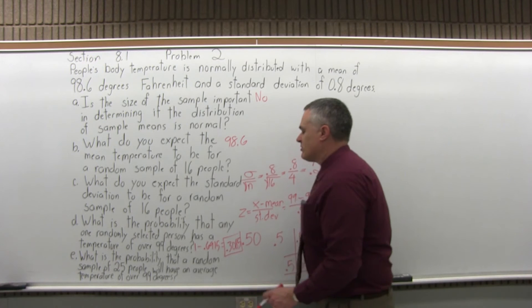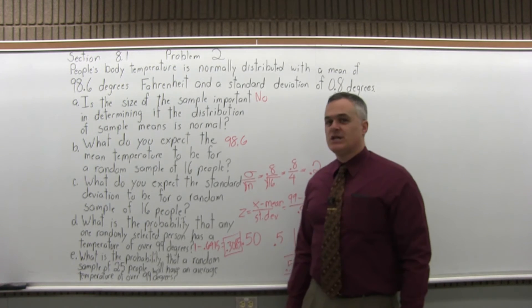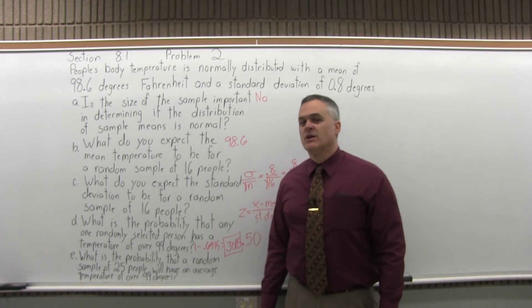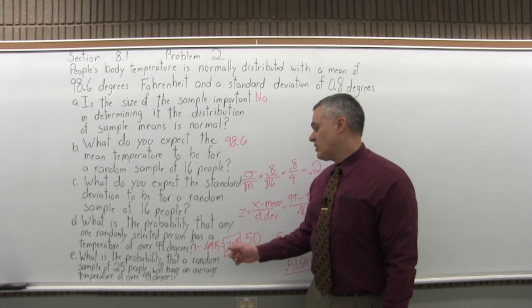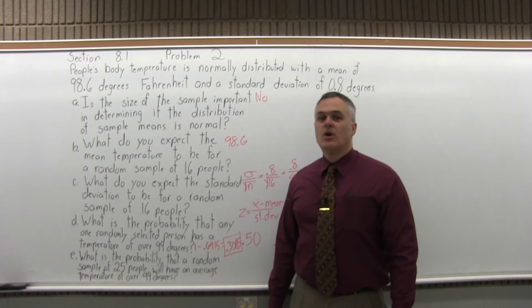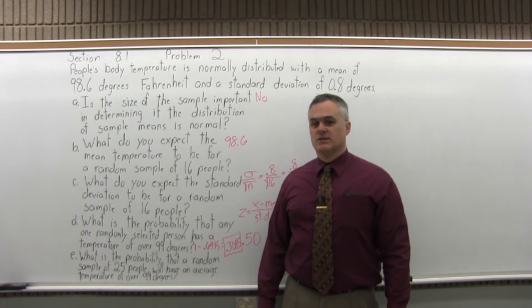So there's almost a 31% chance that any one randomly selected person from the population would have a temperature of over 99 degrees.